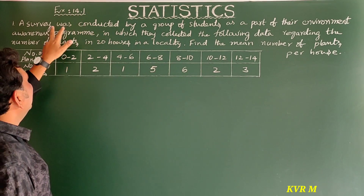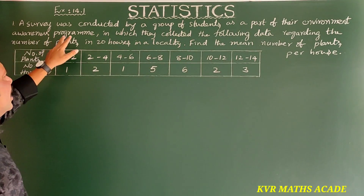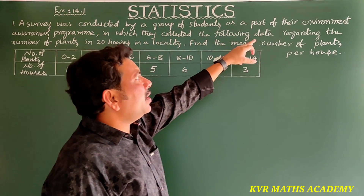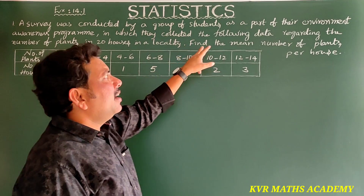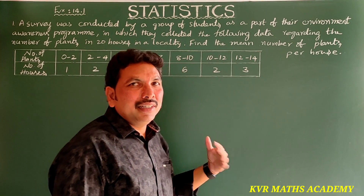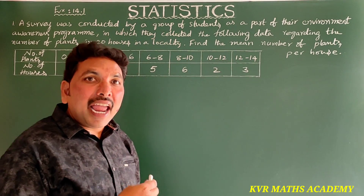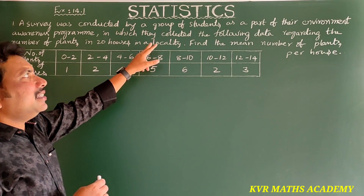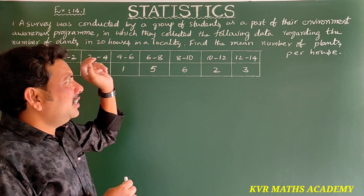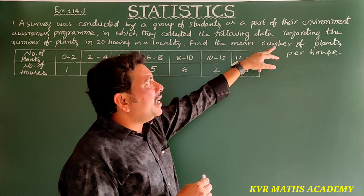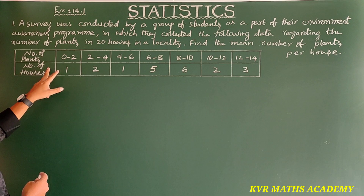This is the first question in Exercise 14.1. A survey was conducted by a group of students as part of an environment awareness program, in which they collected the following data regarding the number of plants in 20 houses in your locality. We have to find the mean number of plants per house. The table gives number of plants and number of houses.